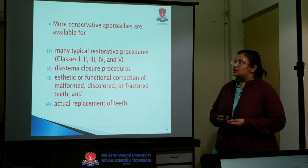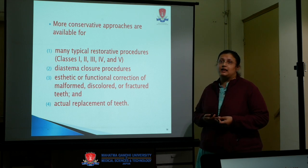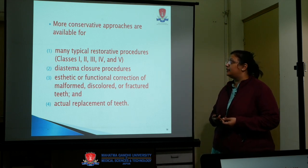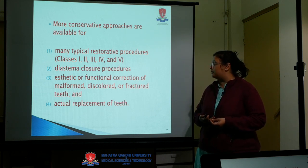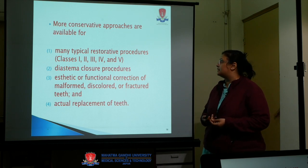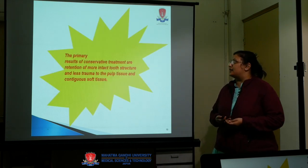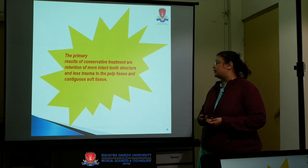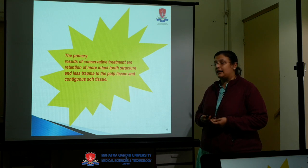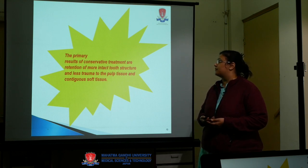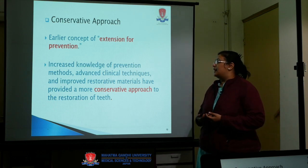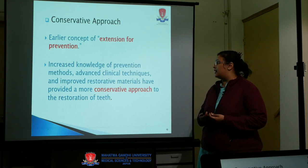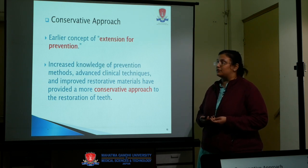More conservative approaches are available for typical restorative procedures like Class 1, Class 2, Class 3, Class 4, and Class 5, diastema closure procedures, aesthetic or functional corrections of malformed, discolored, or fractured teeth, and actual replacement of teeth. The primary result of conservative treatment is retention of more intact tooth structure and less trauma to pulp tissue and contiguous soft tissues. The earlier concept was extension for prevention; however, increased knowledge of preventive methods, advanced clinical techniques, and improved restorative materials have provided a more conservative approach to restoration of the teeth.